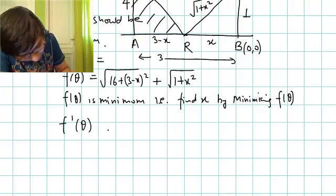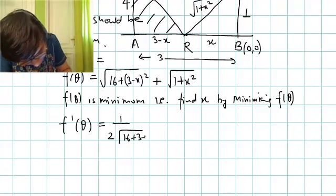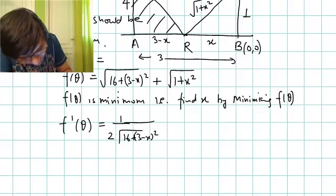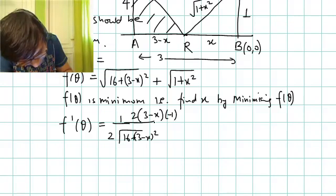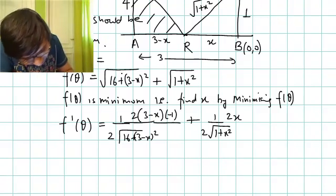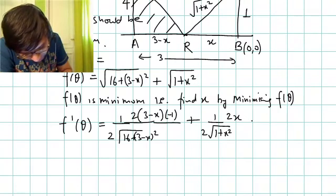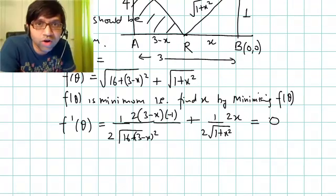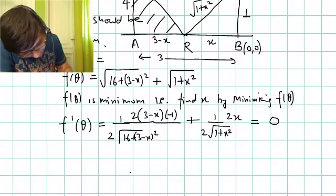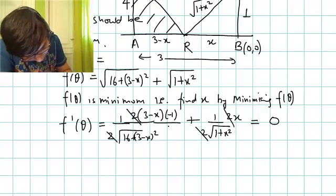Take the derivative of this. When we apply chain rule: 1/(2√(16+(3-x)²)) times the derivative of the quantity inside the square root, which is 2(3-x)(-1) using chain rule, plus 1/(2√(1+x²)) times derivative of 1+x², which is 2x. So I have differentiated this with respect to x. Now once we have the derivative, we put this equal to 0 to find the value of x where derivative is 0. Cancel this 2 with this 2. It is (3-x)².